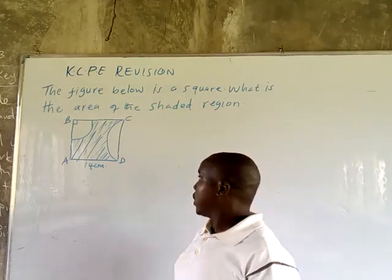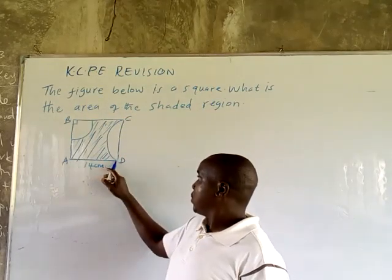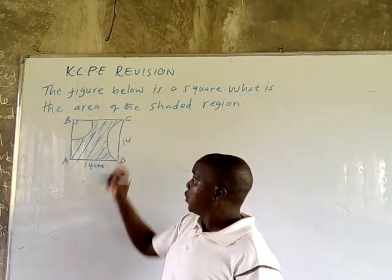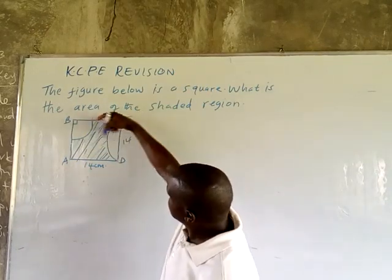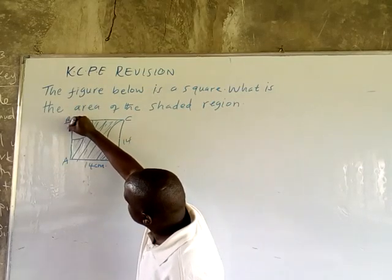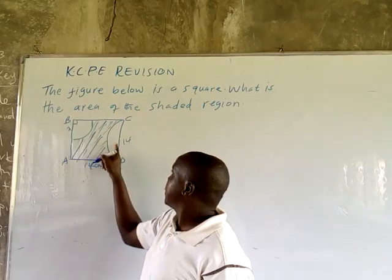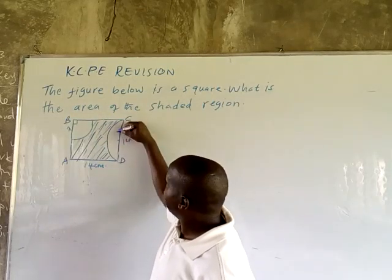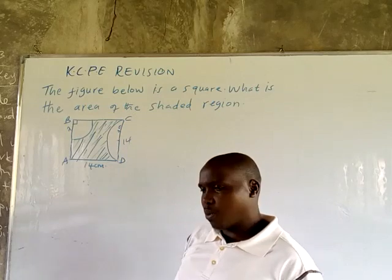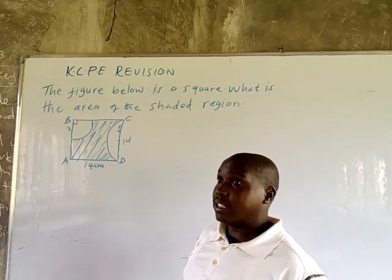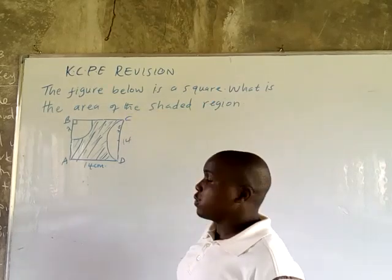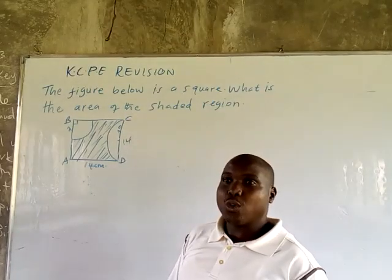The square has a side of 14 centimeters — from here to here is 14, from here to here is 14, and from here to here is 14. Therefore, the radius of the circle here is going to be 7 centimeters.